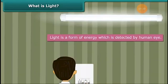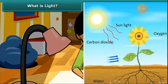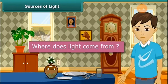So now, what is light? Light is a form of energy which is detected by the human eye. It is everywhere around us. It is not only useful for us to see things, but also for plants to produce food. Now we are going to see the sources of light.